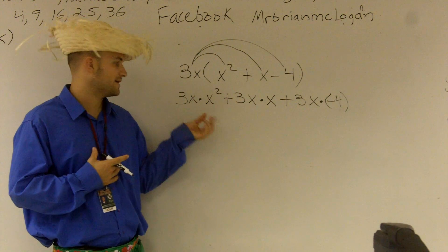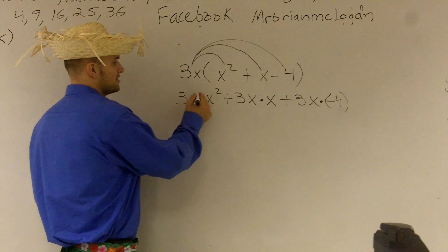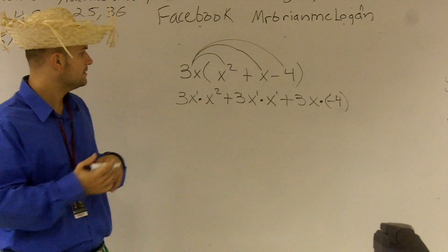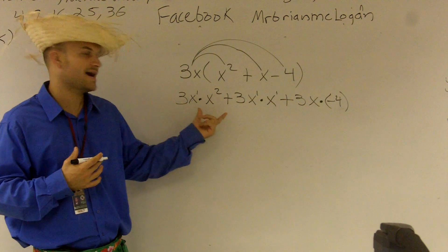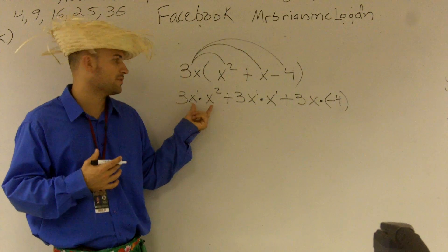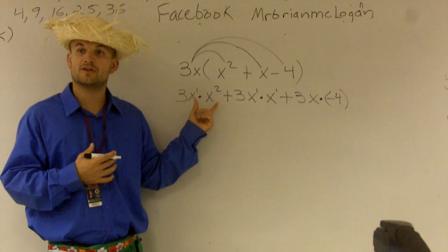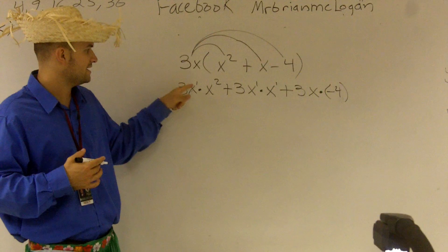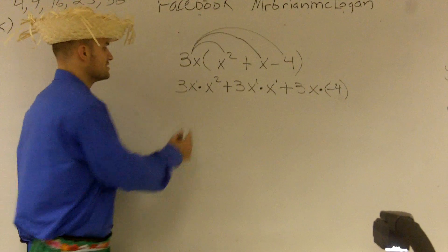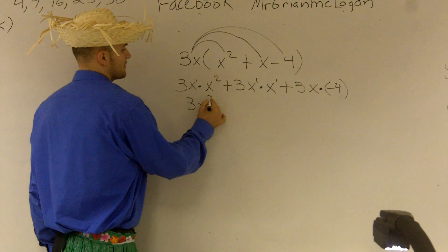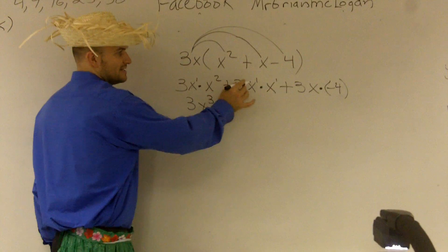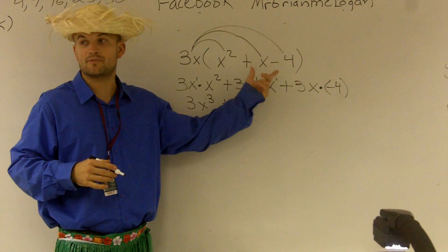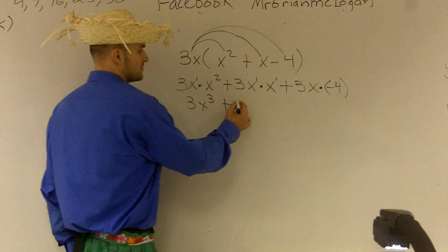The next thing is we need to multiply these. Remember, these have little exponent ones — if there's no exponent there, we know we can write a 1. When you multiply a number with an exponent times another number with an exponent, you add the exponents. So 3 times x times x squared is 3x cubed, plus 3 times x to the first times x to the first — you add 1 plus 1, which gives you 2 — so it's 3x squared.